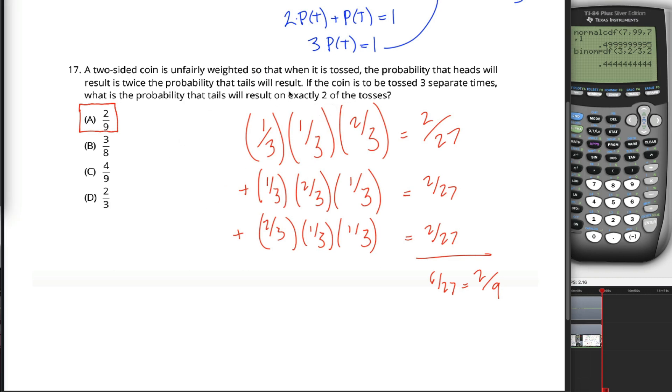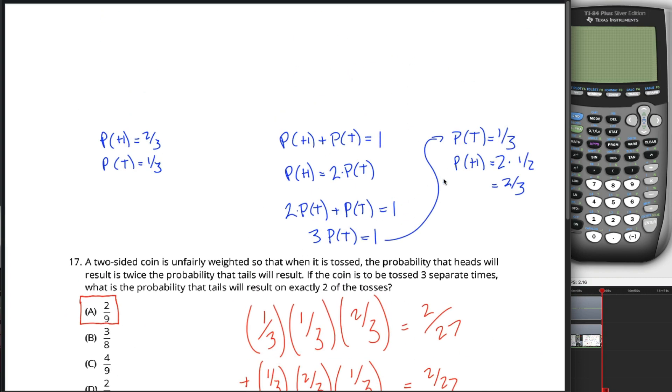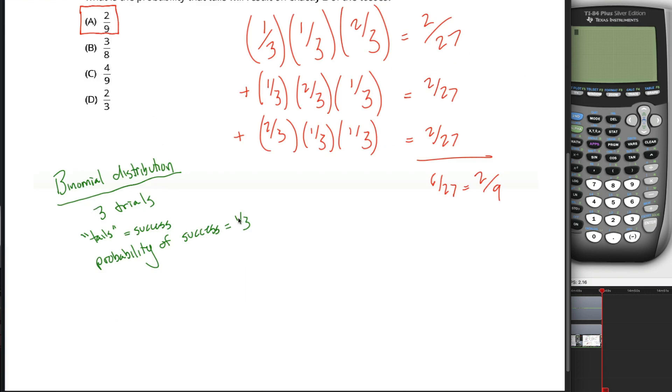When you're in a situation like this where two different things can happen, you have what's called a binomial distribution. A binomial distribution has two different parameters. The first is the number of trials, the number of times you're tossing the coin, which is three. And the second is the probability of success. Here it's up to us to define what success means. Is head success or tail success? It really doesn't matter, you just have to pick one. Since the question asks what is the probability that tails will result on exactly two of the tosses, let's call tails a success, in which case the probability of success, as we figured out above, is one-third. With these two parameters, three and one-third, we can use the binomial distribution function on our calculator.